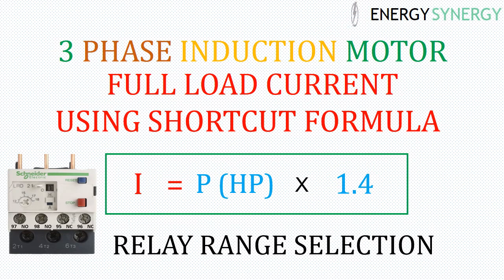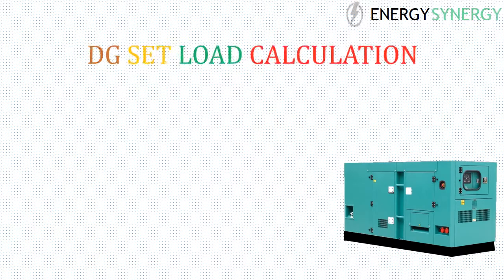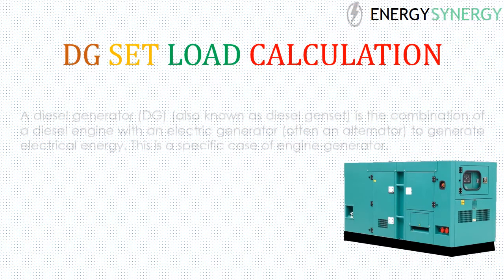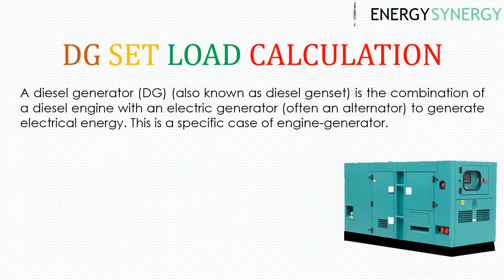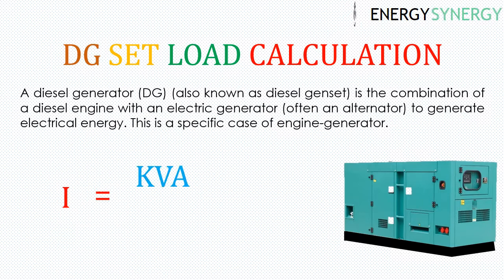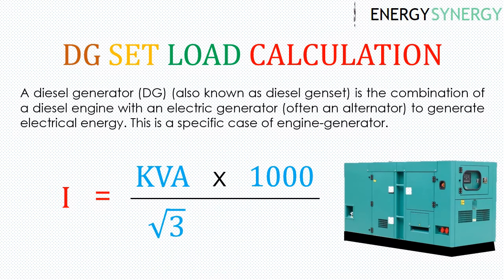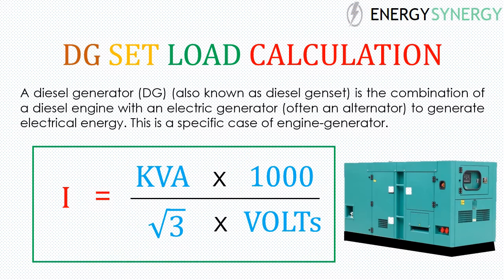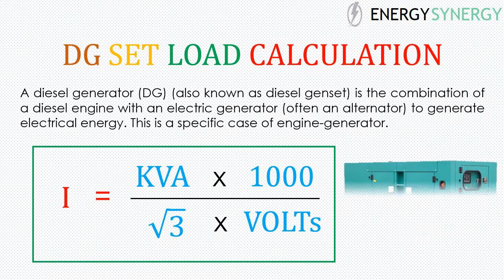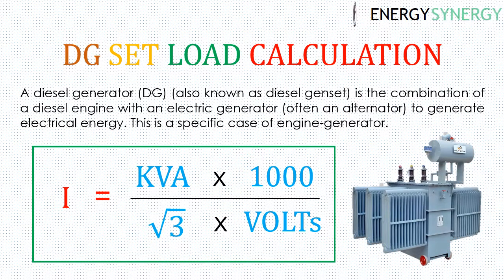This doesn't mean the formula is incorrect — it will give you a good idea of the motor's full load current. Next comes DG set load calculations. A diesel generator, also known as a diesel genset, is the combination of a diesel engine with an electric generator to generate electrical energy. The formula for calculation of load is: kVA × 1000 / (√3 × V). This formula is also used to calculate the current of a three-phase transformer.